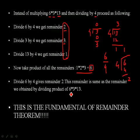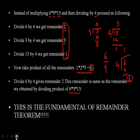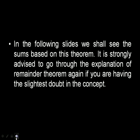If you would have taken the product of these 3 numbers and then divided by 4, you would have got the same remainder as we saw previously. This is the basic fundamental of remainder theorem. I hope you are now clear about how this really works. It will be very useful in determining remainders. Questions on remainders are frequently asked in examinations like CAT, GMAT and GRE. Let us move ahead and discover some tricky questions regarding this theorem. In the following slides, we shall see sums based on this theorem.